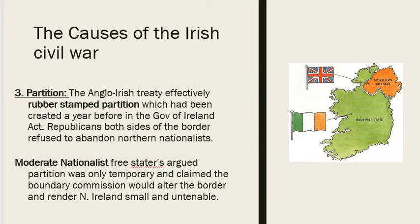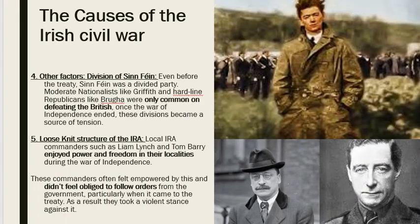So that was another very divisive part of the treaty. Republicans did not want to abandon the nationalists in Northern Ireland to a British government up north. Apart from the treaty itself, there were a number of other causes of the Irish Civil War, and most of these are to do with how certain groups and people reacted to the Anglo-Irish Treaty.